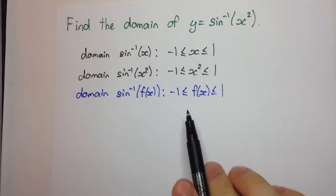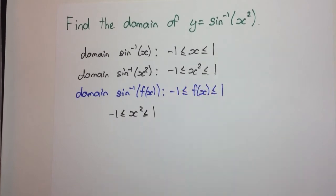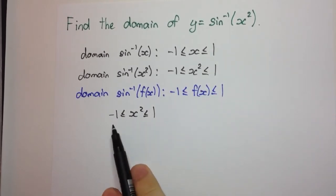So we want to solve this inequality for x. Sometimes when you need to solve an inequality that's bounded above and below, it's best to consider the two inequalities separately.